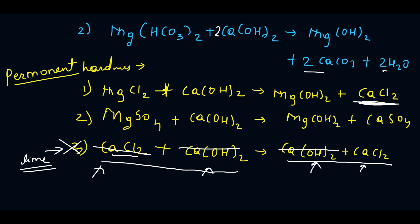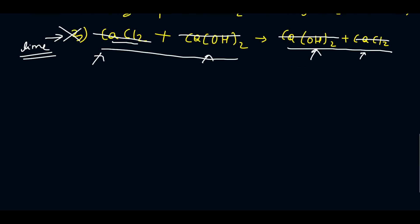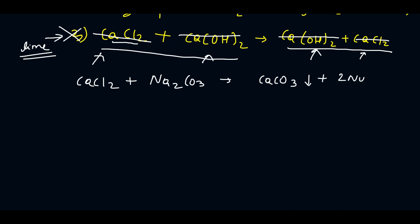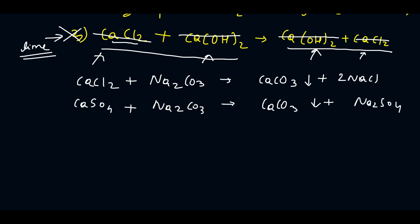The calcium permanent hardness with soda: CaCl₂ plus Na₂CO₃ gives CaCO₃ (which settles down) plus NaCl. Another calcium permanent hardness: CaSO₄ plus Na₂CO₃ gives CaCO₃ (which settles down) plus Na₂SO₄. Always remember that the permanent hardness of calcium does not react with lime — it reacts only with soda.